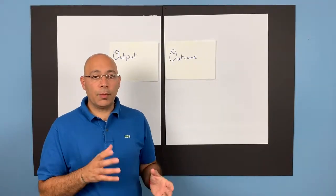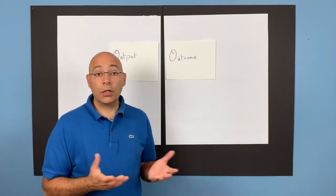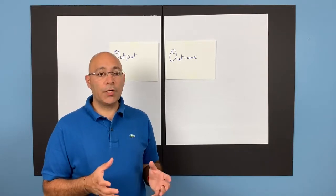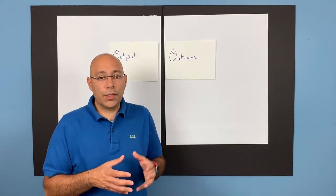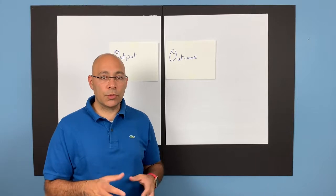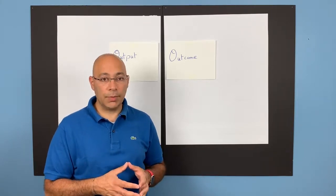One example to look at it from output versus outcome is a contact center. One of the main measures that contact centers work for is how many number of customers or calls you are doing on an hourly basis.